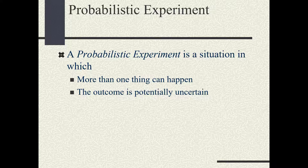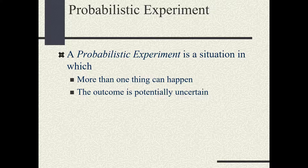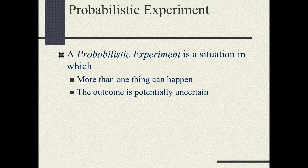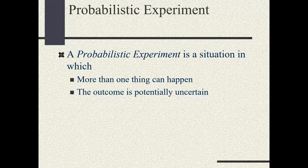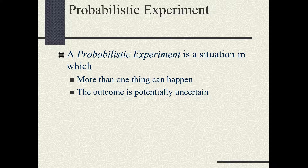Next, we look at the term probabilistic experiment. First, what is an experiment? An experiment is any activity that yields or generates an outcome. But what is a probabilistic experiment? A probabilistic experiment is still an activity that generates an outcome, but we call it probabilistic because those outcomes cannot be predicted with 100% accuracy.